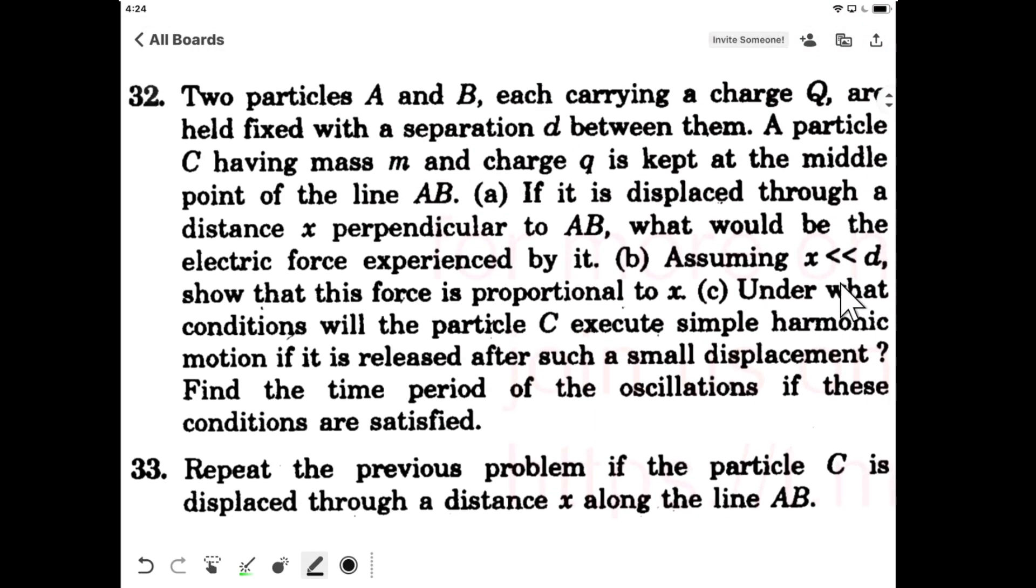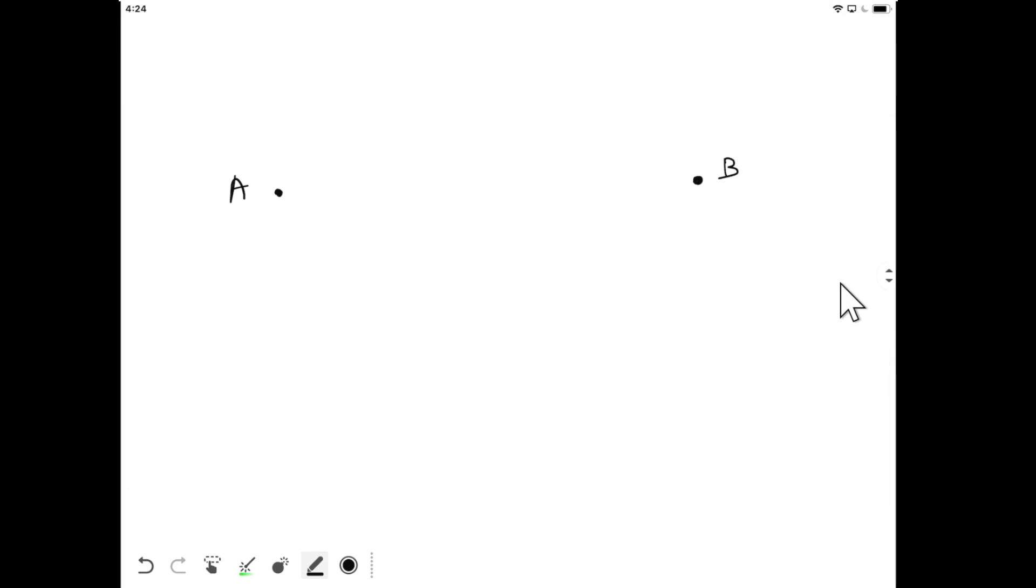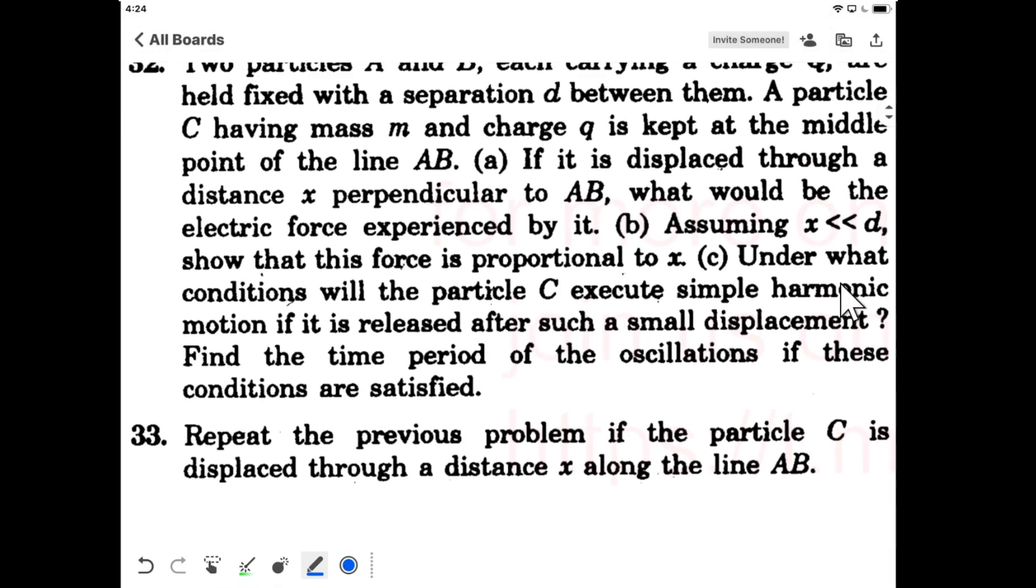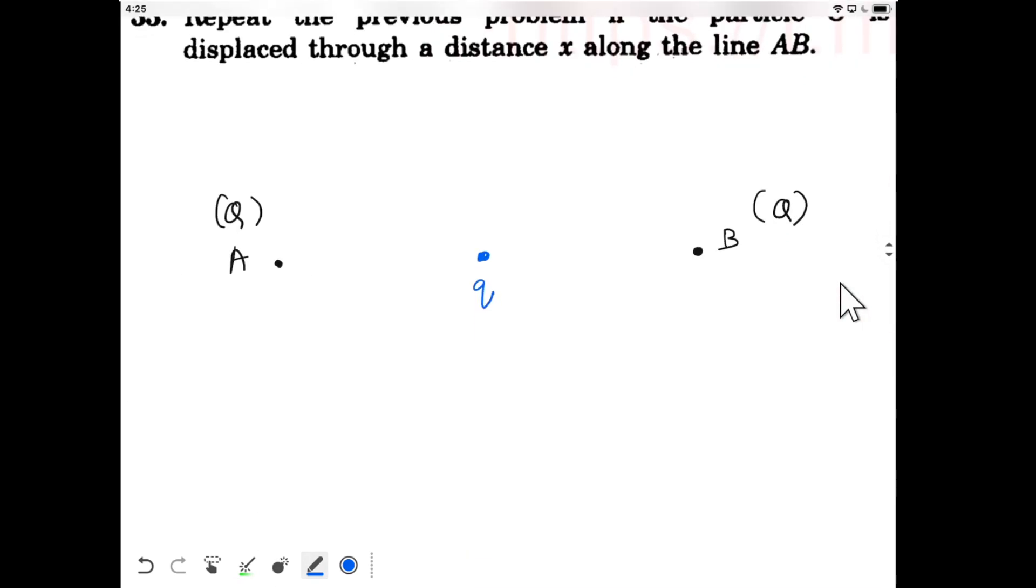Let's draw the question. Here we have two charges A and B, they have charges capital Q. Exactly at the center we have a charge small q. What is the distance between the two charges? The distance between the two charges is d, so this distance will be d/2.